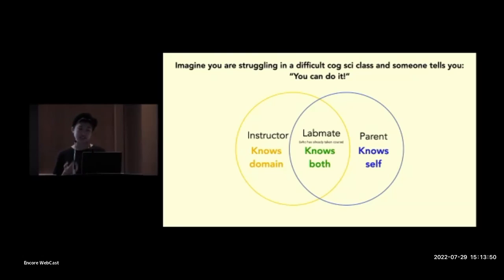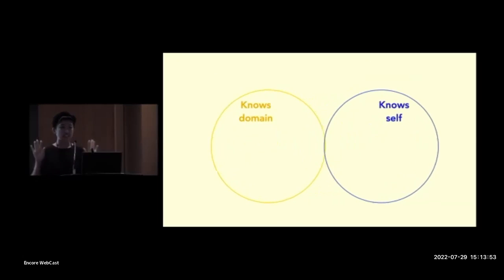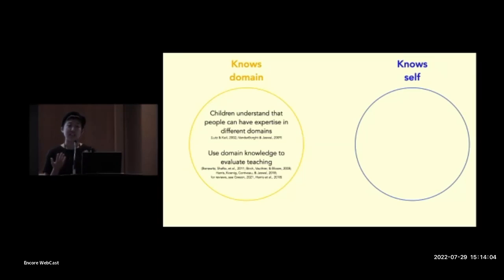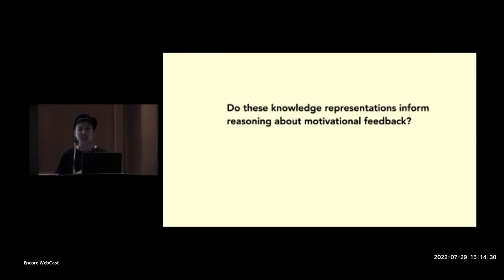And what we know from past work in cognitive development is that children can represent each of these contents of knowledge. We've learned that children understand that people have expertise in different domains, and they can use these representations of others' knowledge to then evaluate their teaching and decide, for instance, who to approach for information. Now, on the other side, some of my own recent work has shown that children can infer others' knowledge or beliefs about their abilities. And work by Lonnie Bass and colleagues has shown that children can then use these representations to evaluate teachers and interpret their instruction directed at them.